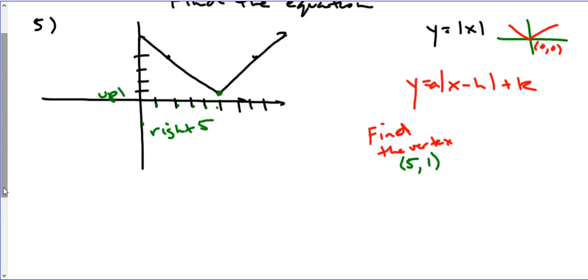We have Y equals A times the absolute value of X minus 5 plus 1. That will give us where the vertex will move to. Now, the final thing is we have to find the A value if there is an A value.